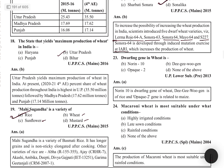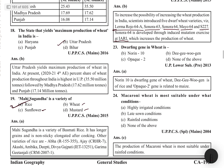Induced mutation means changes were induced externally in particular gene locations. The dwarfing gene in wheat is called Norin 10. DG Wujan is the dwarfing gene of rice, and Opaque 2 is related to maize. So wheat's dwarfing gene is Norin 10, rice's is DG Wujan, and maize's is Opaque 2.